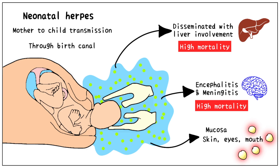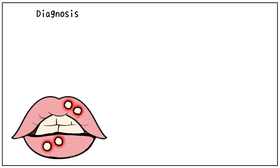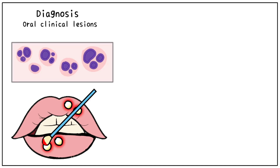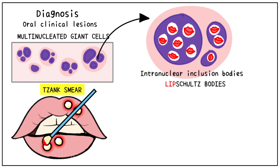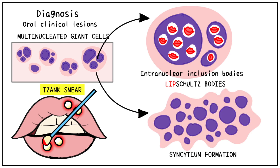For the diagnosis of herpes, usually the oral clinical lesions are sufficient. To confirm the infection, we take a sample from a freshly opened vesicle and prepare a smear to perform the Tzanck test. It shows numerous multinucleated giant cells, which on close examination reveal intranuclear inclusion bodies called Lipschutz bodies. Another finding that may be present is syncytium formation, meaning multinucleated protoplasmic aggregation of cells without apparent cell outlines.